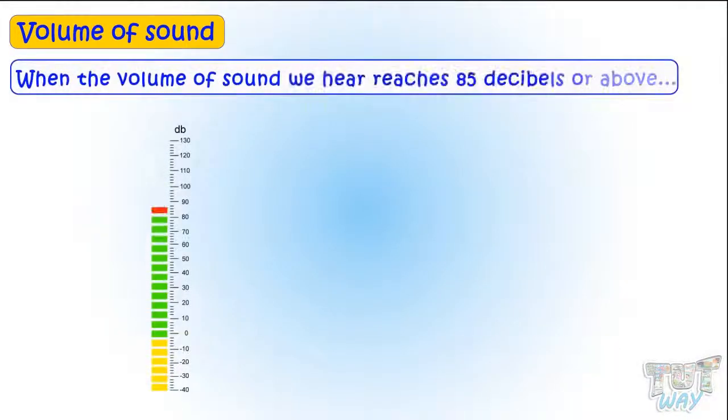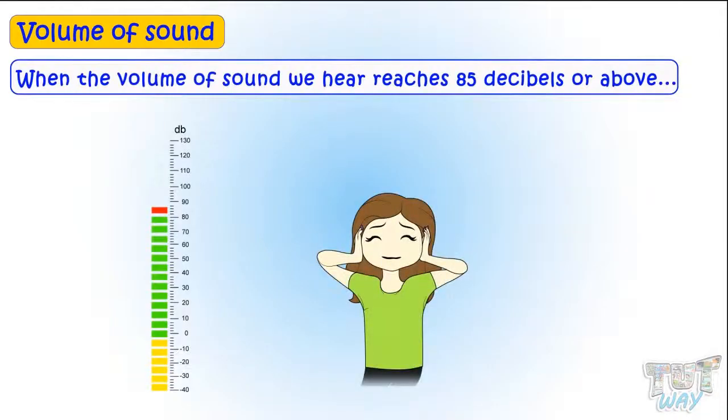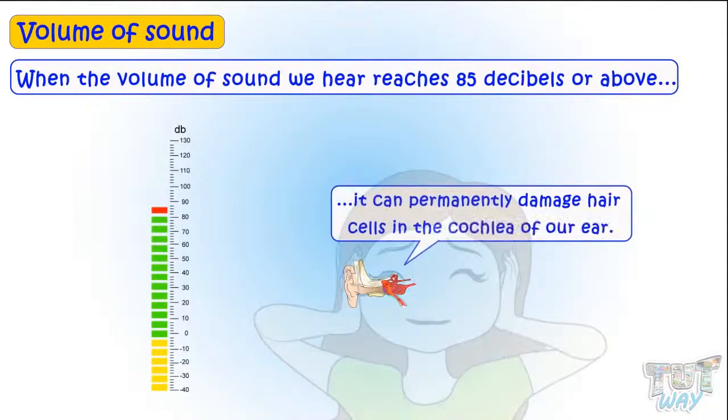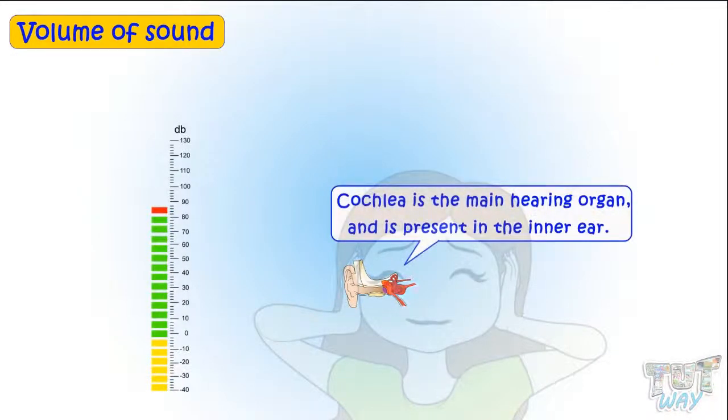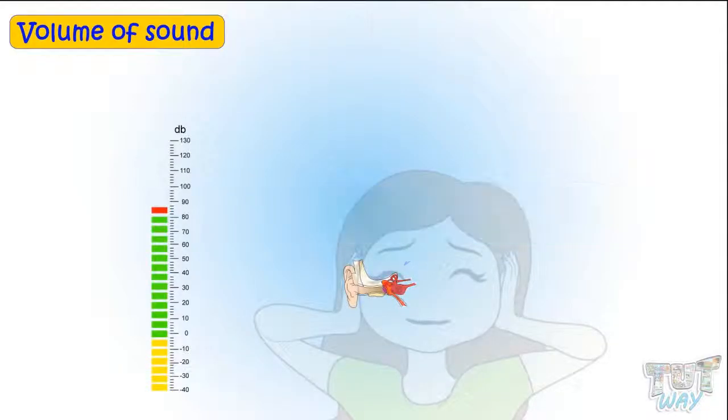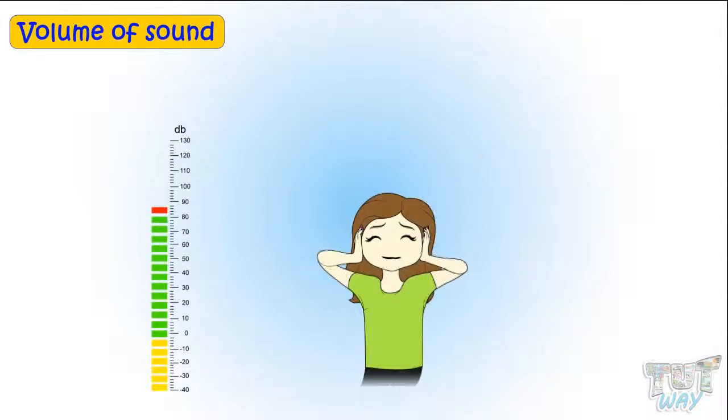When the volume of noises we hear reaches 85 decibels or above, it can permanently damage hair cells in the cochlea of our ear, which is the main hearing organ and is present in the inner ear, and a person can then become deaf.